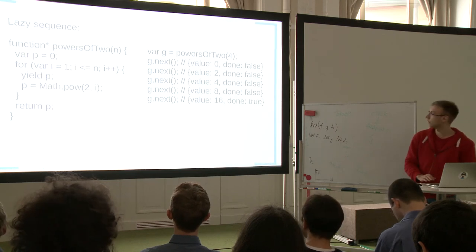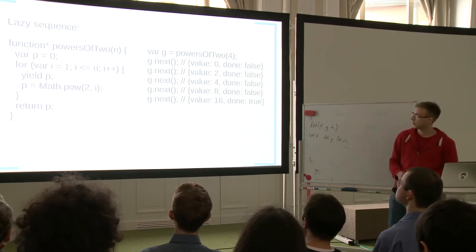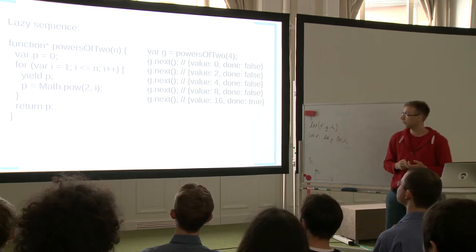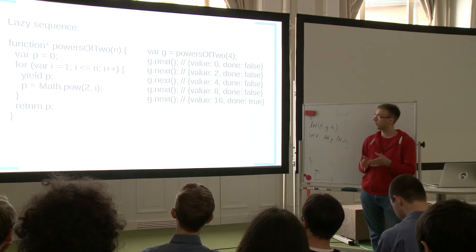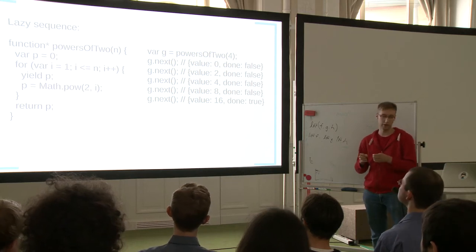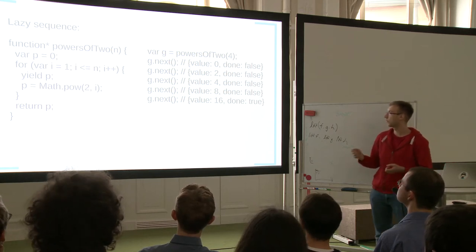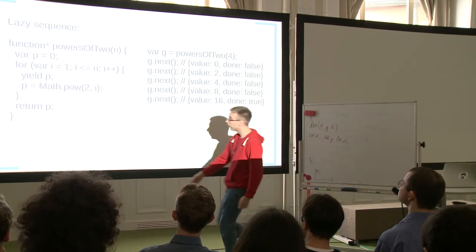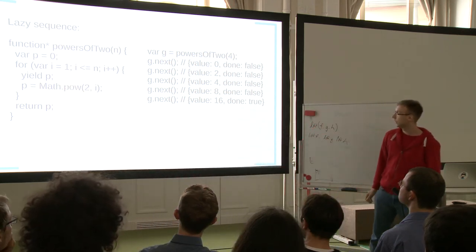Let's look at a simple example of a generator function. You tag it with an asterisk to make it a generator. Here we have a function called 'powers of 2' — you pass in a number and it generates powers of 2 up to that number, from 2 to the 0, to the first, to the second, and so on. There is a yield point here where the function execution actually stops and yields the value p.